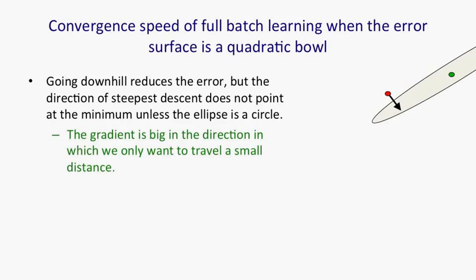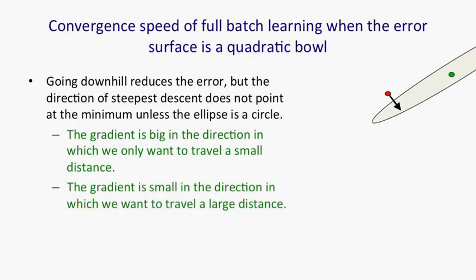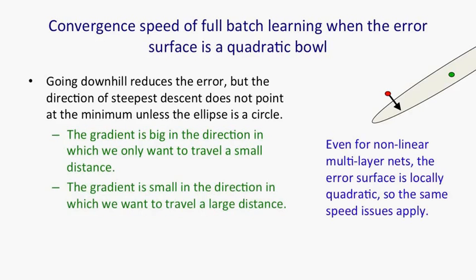We've got a gradient that's very big across the ellipse, which is a direction in which we only want to travel a small distance, and the gradient's very small along the ellipse, and that's a direction in which we want to travel a large distance. It's precisely the wrong way around.